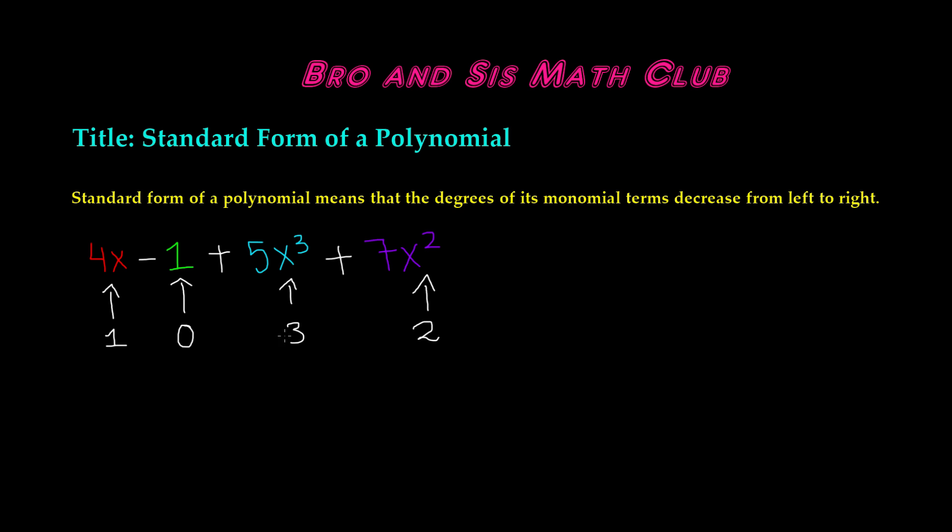So we have 1, 0, 3, and 2. So when you have it in standard form, the degrees of the monomial terms decrease from left to right. So first we need to write the biggest term with the biggest degree, and then we need to go down. So the one with the largest degree is obviously 5x cubed, so that's going to go first.